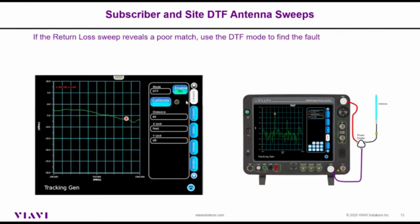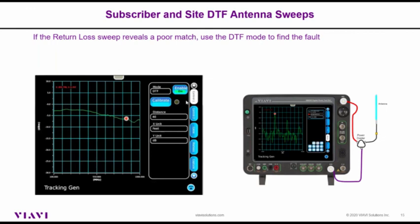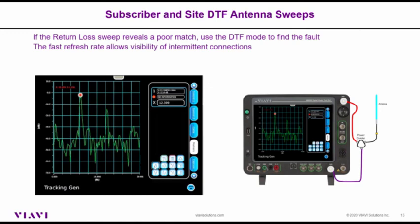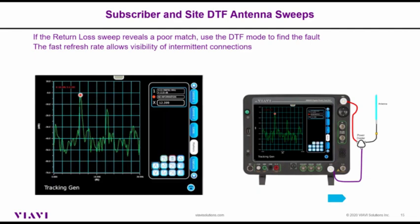You can switch the display from return loss to VSWR and change the scale factor — for example, from 2 to 1 — to magnify the trace and see that this particular antenna is tuned to the higher-frequency 800 band. It will reflect lower-frequency signals back to the transmitter. If the return loss sweep reveals an issue, you can do a distance-to-fault sweep using the power divider. The distance-to-fault plot has a very fast refresh rate of about two seconds per sweep, so if things are changing — like the wind blowing the antenna — you would see movement on the plot.